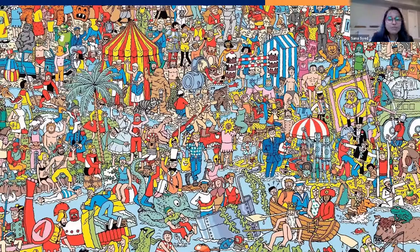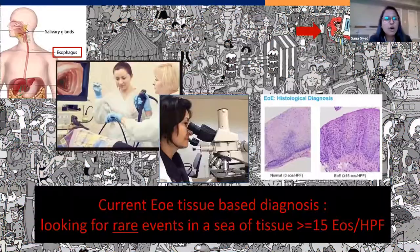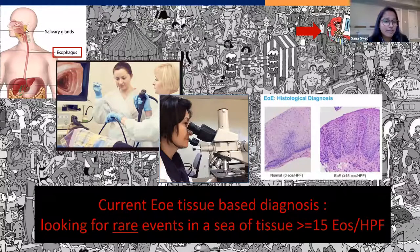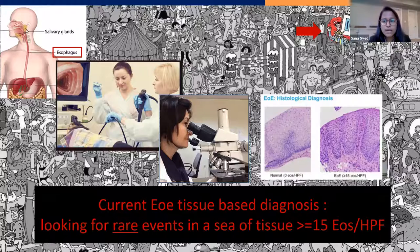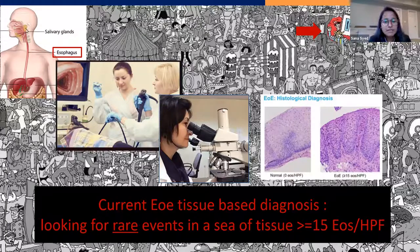In Where's Waldo you have to hunt in a sea of images. What do we do in GI diagnosis? These are literally exactly this. In EOE the disease is in the esophagus, so a gastroenterologist puts a video camera down, takes tiny pieces of tissue — two to three millimeters big — and then a pathologist looks at these in high magnification. This is an example of normal esophageal tissue: no inflammatory cells, zero. In eosinophilic esophagitis you really see all these little dots — a proliferation of inflammatory cells. Current EOE tissue diagnosis is based on looking at rare Waldo-like events in a sea of tissue.